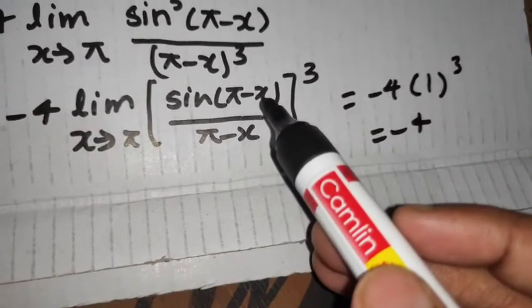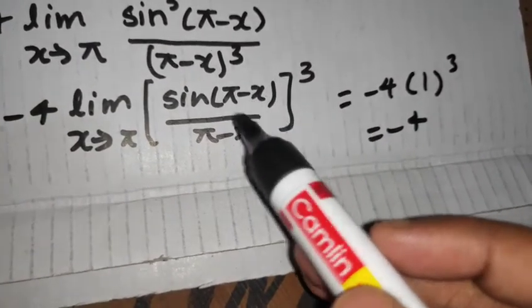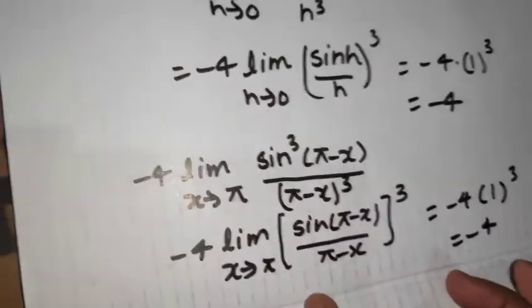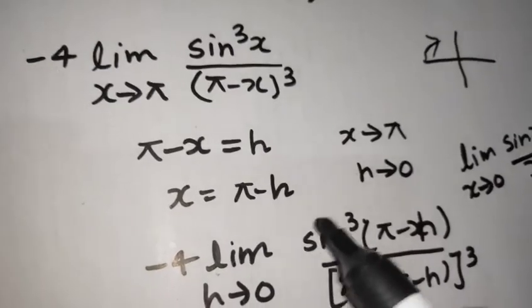If you put pi you will get pi minus pi so sin 0 by 0 so you can directly write this or if you are having a problem with this method then you can always go for the transformation.